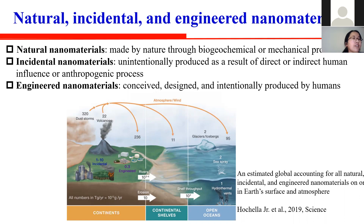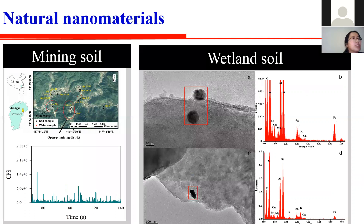Here are examples of natural nanomaterials. I performed a field survey in a mining area in China. The soil samples were analyzed by single particle ICP mass spectrometry. This is the raw data — a pulse represents a nanoparticle. Nanosilver was detected in these mining soils. Another example is a wetland soil spiked with silver ions; after several days of aging, nanosilver with a particle size of 20 nanometers was detected by TEM-EDS.